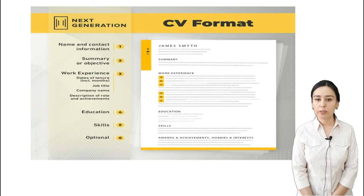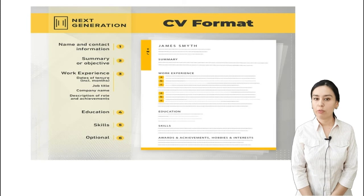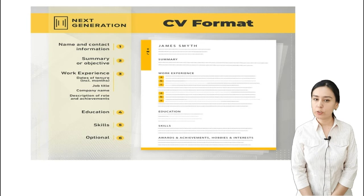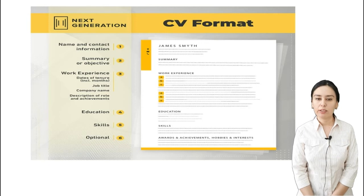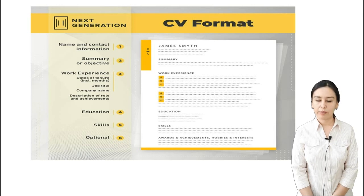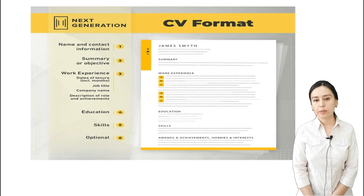Next: work experience. Here you write where you worked before applying for the new job — the name of the organisation, your position or job title, the period of time you worked there, and a description of your role. Next: education. Here you include information about where you studied, your major degree, and master's degree. Work experience and education sections should be in chronological order.